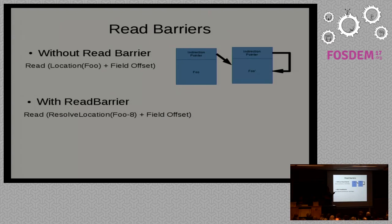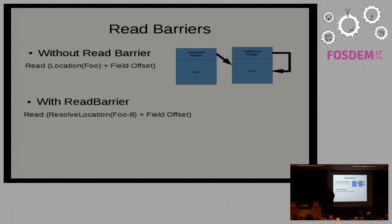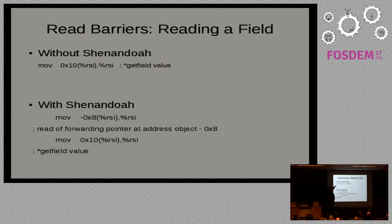All object accesses have to go through a read barrier. The common wisdom from the Lisp days was that reads are seven times more prominent than writes, so you can't afford a read barrier. But our read barrier is extremely cheap — we have one hardware instruction. Without Shenandoah on Intel, a getfield is a single move. With Shenandoah on Intel, we move the contents of the forwarding pointer into the register and then do the read of the value. So it really is one single machine instruction for a read barrier, and as I'll show you later, it is not cost prohibitive.